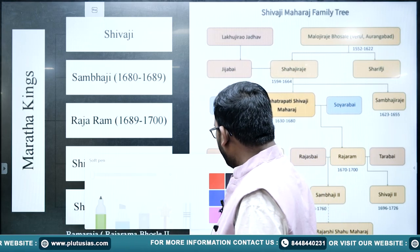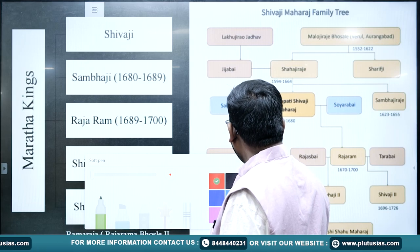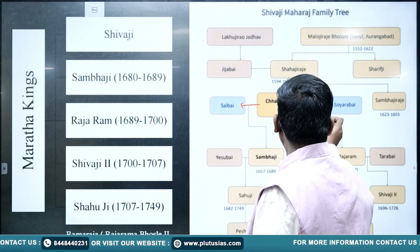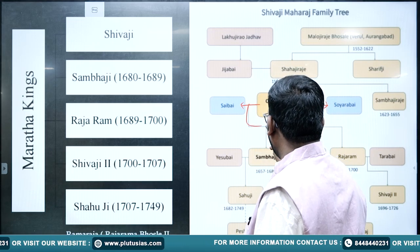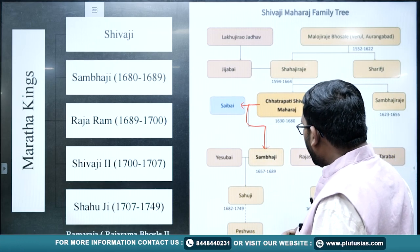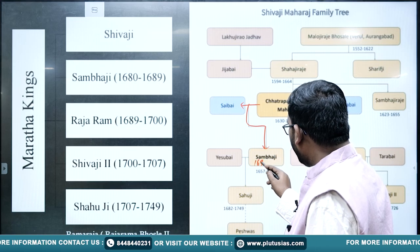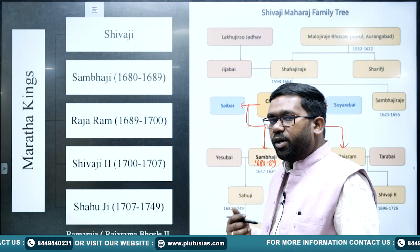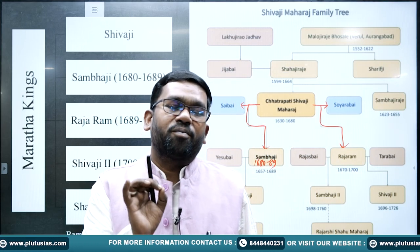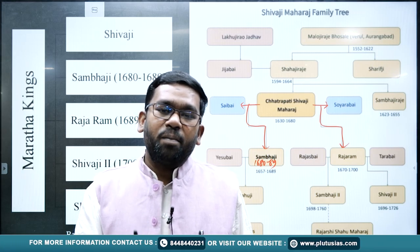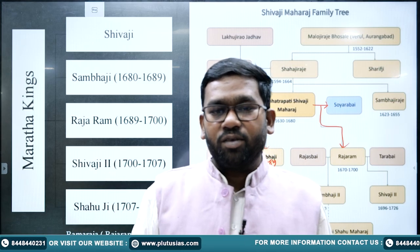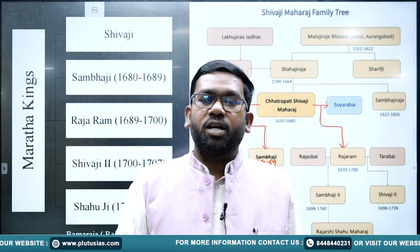Now let me briefly tell you about Shivaji's successors. Chhatrapati Shivaji Maharaj had two wives. Saibai had a son called Sambhaji, and Soyarabai had a son called Raja Ram. Sambhaji became the ruler from 1680 to 1689. However, Raja Ram was instigated by Aurangzeb against his brother and fought against him. Finally, just 8-9 years after Shivaji's death, Sambhaji was captured and executed by Aurangzeb's forces.